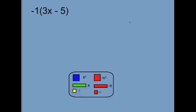Finally, for our last example, we'll be distributing a negative 1. So again, we'll start by modeling what's inside. We have 3x, and then we have minus 5.